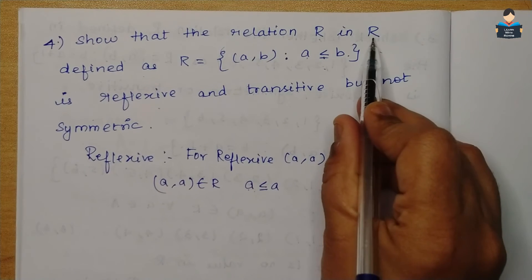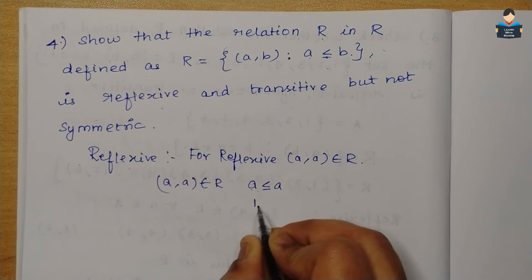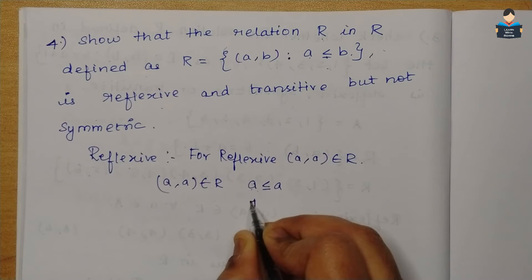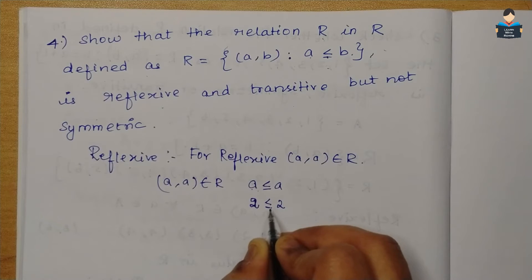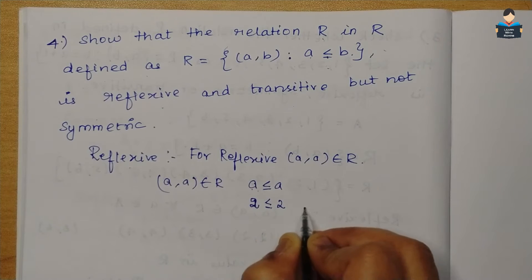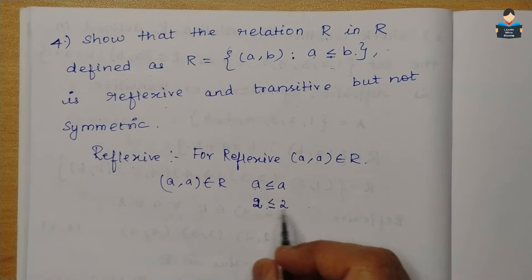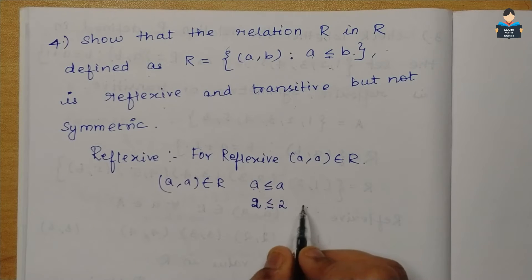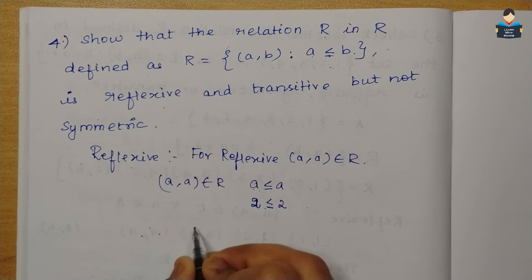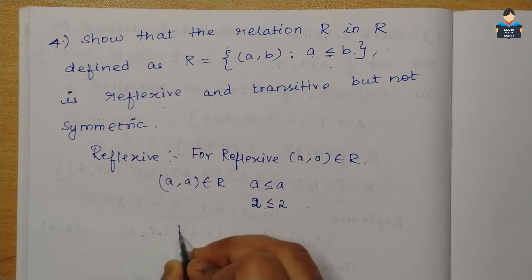Since a is always equal to a, any number equals itself. So the condition is satisfied — it is reflexive.